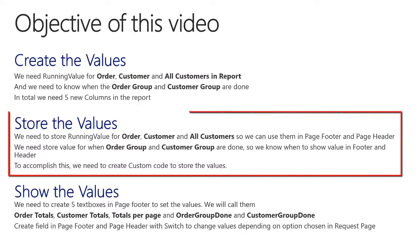For storing the values, we need to store the running value for the order, the customer, and all customers, so we can use them in the PageFooter and the PageHeader. And we need to store the values from when the order group and the customer groups are done, so we know when to show the values in the PageFooter and the PageHeader. To accomplish this, we need to create custom code to store the values.